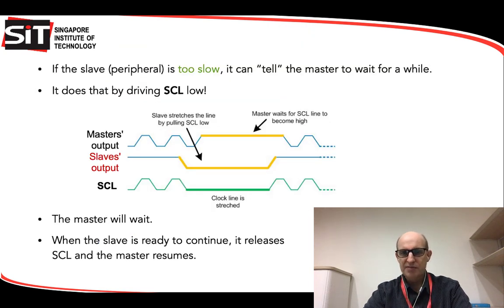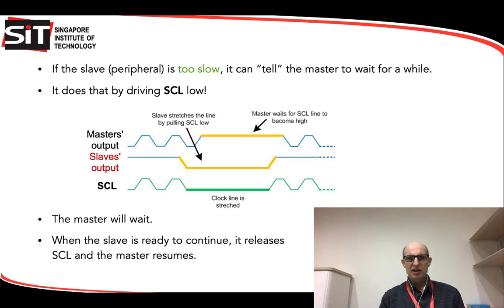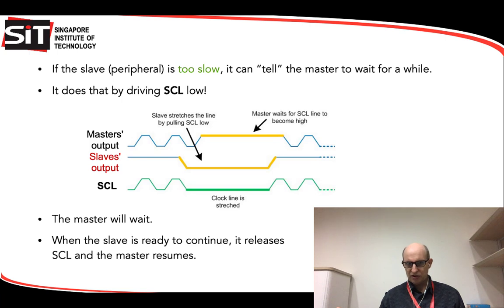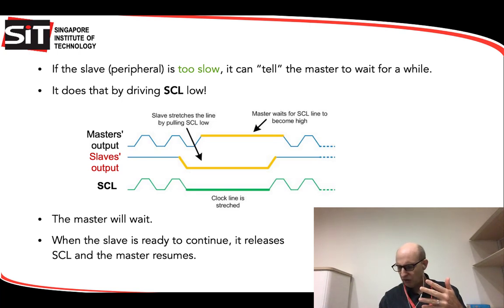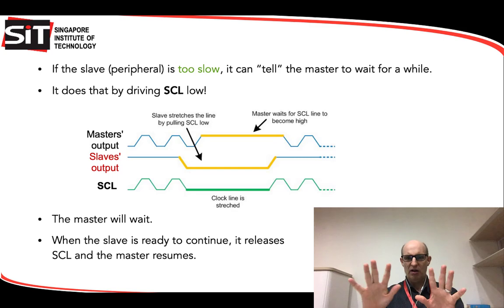Sometimes the slave is pretty slow. This happens a lot with today's very fast microprocessors and relatively slow peripherals. If the slave is slow, it can tell the master to wait by driving SCL low. The slave isn't normally supposed to write to SCL — it should only write to SDA when told to — so this is an unusual condition. Whenever the master detects that somebody has pulled SCL low, the master responds by waiting. The master will wait until the slave stops pulling SCL low, and then continue. It's a neat way of the slave saying: hold on, you're going too fast.